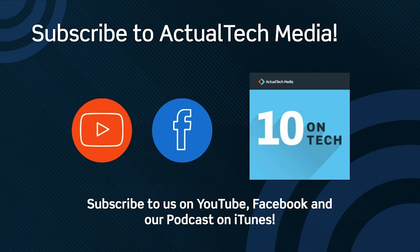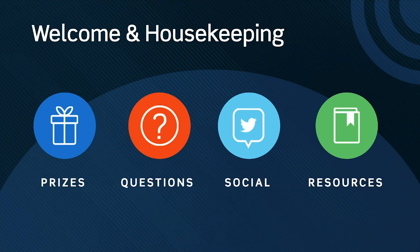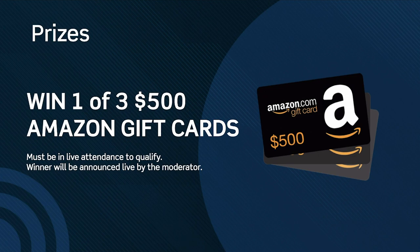We also have a number of handouts in the handouts tab on the left-hand side of your screen. There you'll find a link to the Rubrik homepage for more information, as well as a resource from Faction — specifically the full slide deck presented today, which you can download in PDF. On the EcoCast today we'll be awarding three Amazon $500 gift cards to three lucky attendees on the live event. If you're watching on demand, the drawing has already occurred.